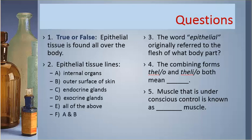Number two. Epithelial tissue lines: A. Internal organs. B. Outer surface of skin. C. Endocrine glands. D. Exocrine glands. E. All of the above. F. A and B.